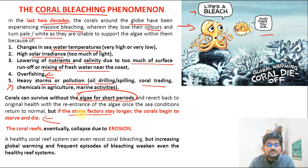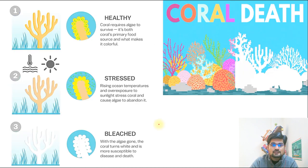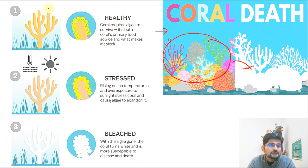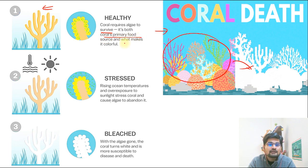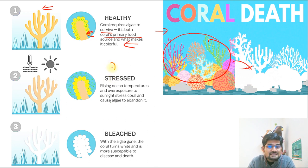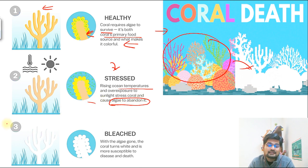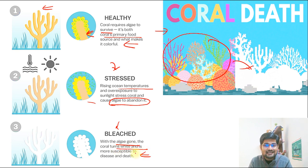Bleaching of coral is directly linked to its survival. Healthy coral requires algae — its primary food source and the source of its color. When ocean temperatures rise and corals are overexposed to sunlight, they become stressed and algae abandon the coral. With the algae gone, the coral turns white and becomes most susceptible to disease and ultimately dies. This is what we call coral death.